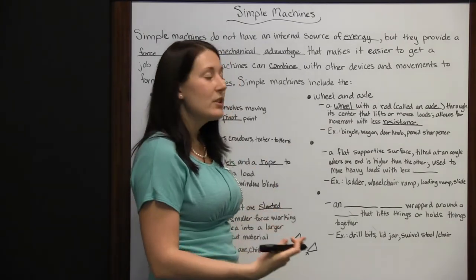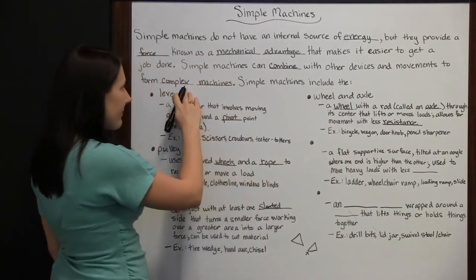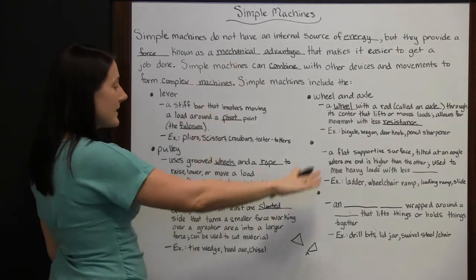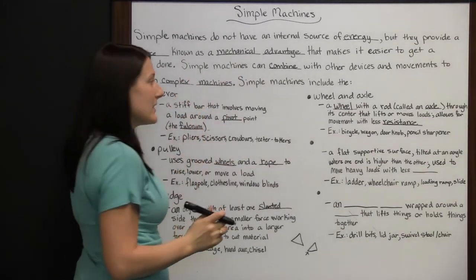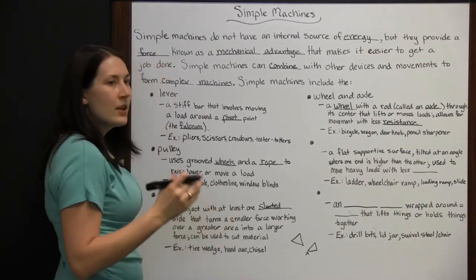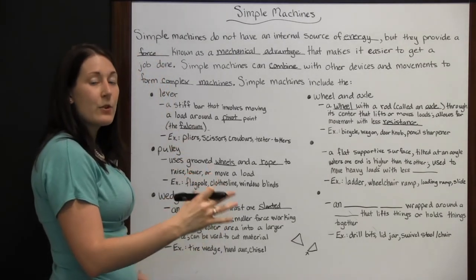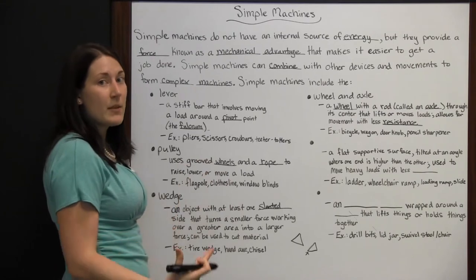These all include the wheel and axle simple machine. Some of them do have other simple machines. That's why we talked about how you can combine several of these or all of these in some machines to form complex machines. You don't often use just a simple machine by itself. You combine it with other things to make your job even easier.